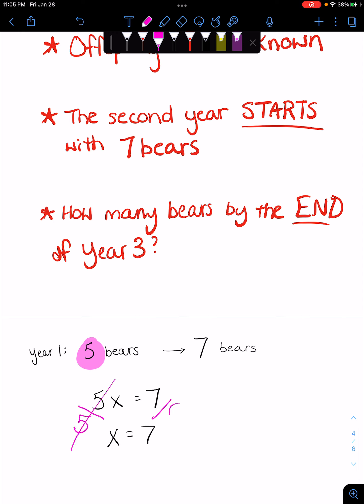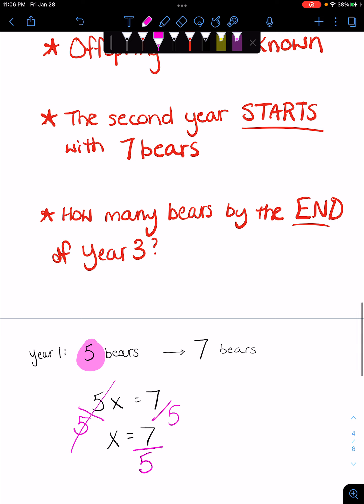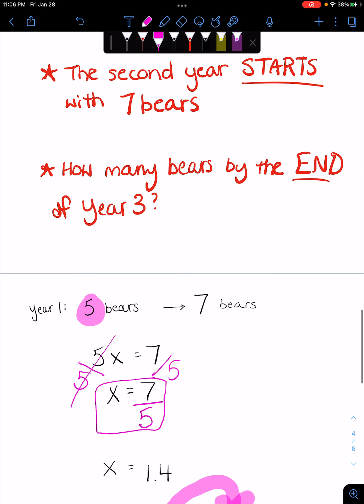x equals seven, and we're going to divide this side by five and those cross out, and then we'll divide that side by five. So that equals five. There's an answer right there. You can get out a calculator, but the important part is how to do it, right? So we just plug that in: seven divided by five. We have x is 1.4. So the bears increase at a rate of 1.4 each year.